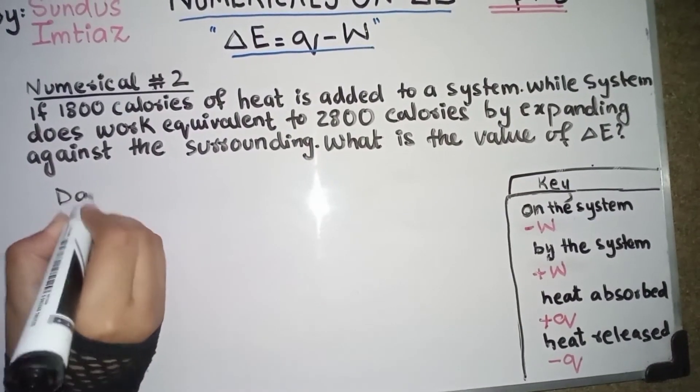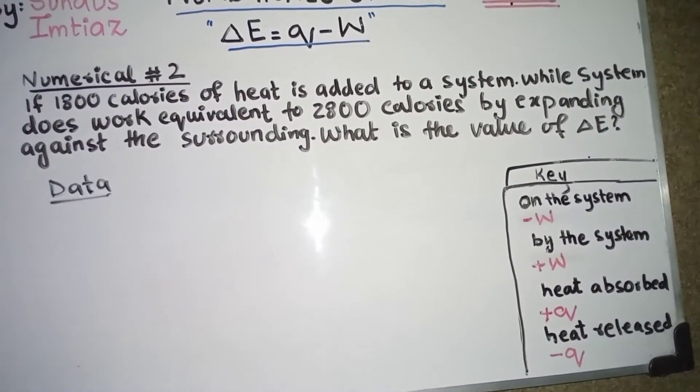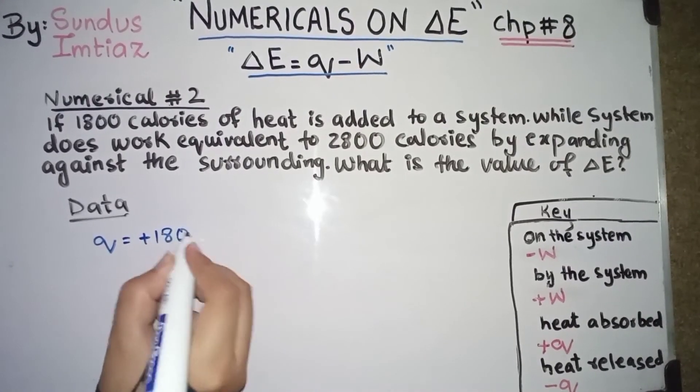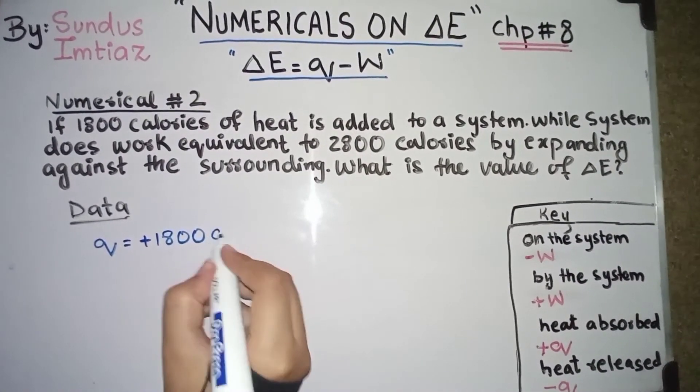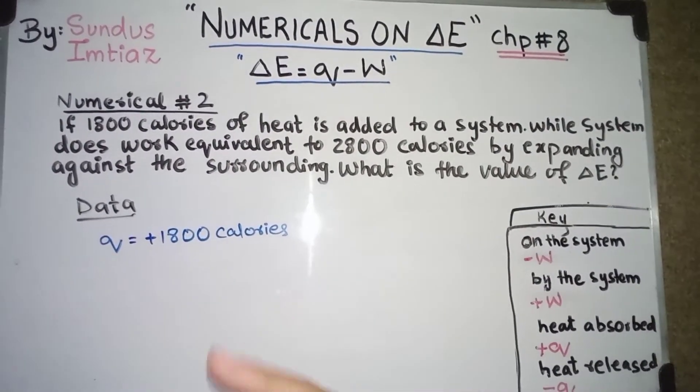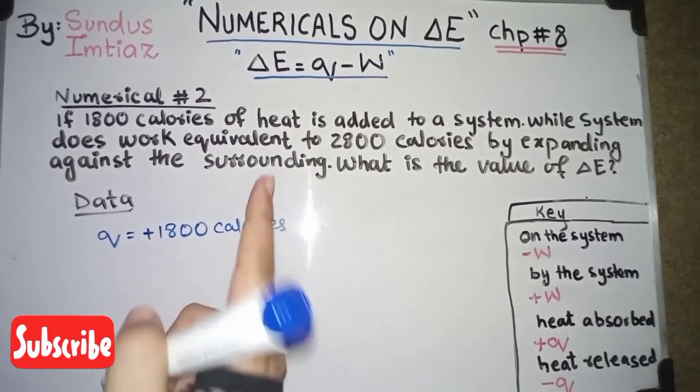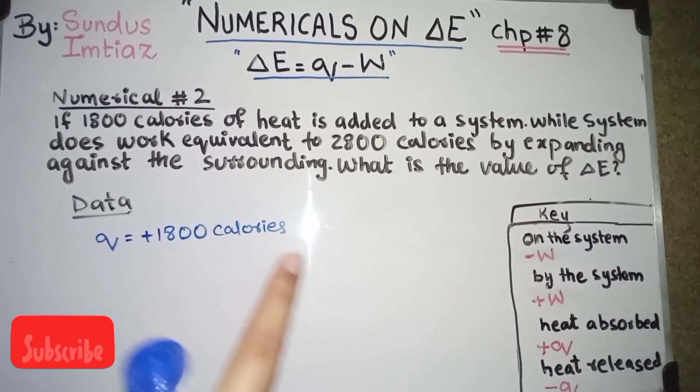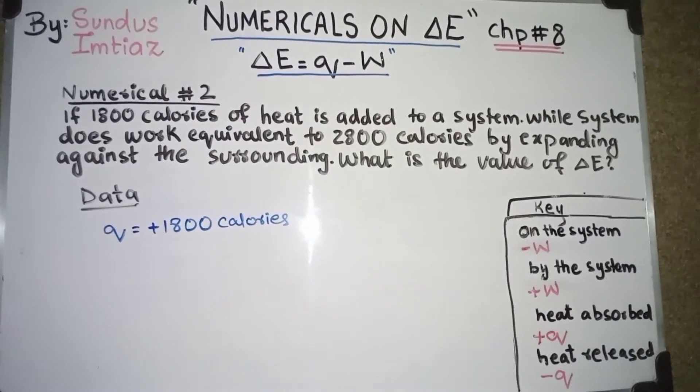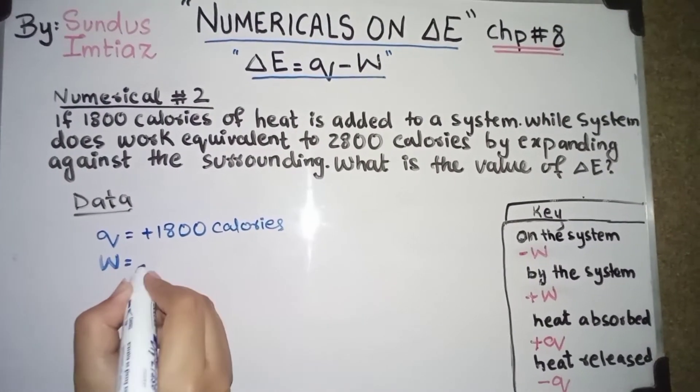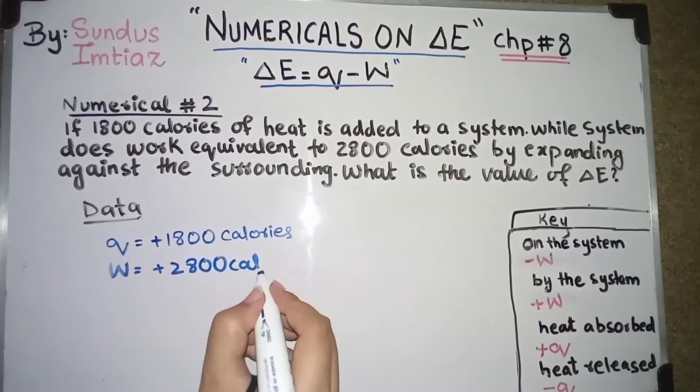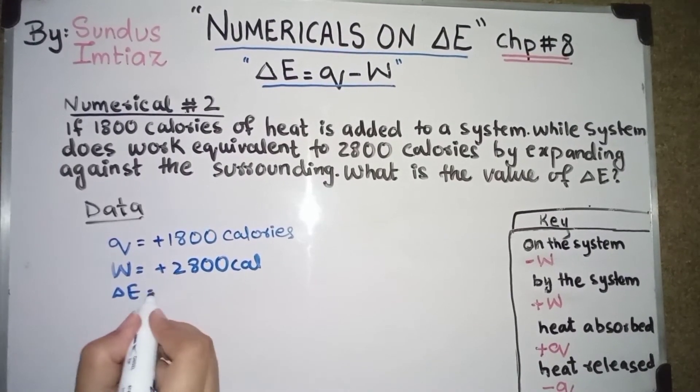Let's find internal energy. Let's start with its data. Q is equals to positive 1800. Now there is calories. So answer would be in calories. Means the change in energy would be also in calories, not in Joules. If there is unit Joules, so energy would be in Joules. If it is written calories, please write the unit calories. W is equals to positive 2800 calories. Let's write CL. And change in energy is unknown.